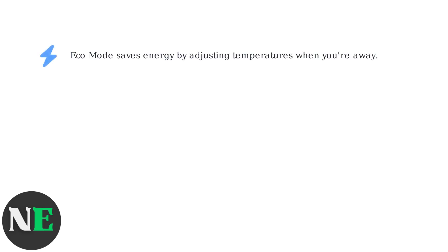Eco Mode on your Nest thermostat is designed to save energy, but it can sometimes override your preferred settings.